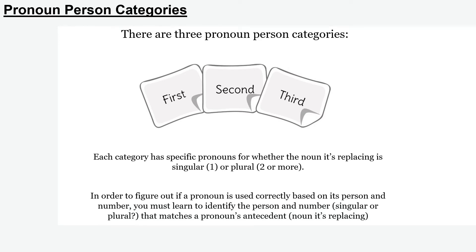In order to figure out if a pronoun is used correctly based on its person and number, we first have to identify the person and number that matches a pronoun's antecedent — the noun that it's replacing. For our purposes, we aren't going to be working very much with second person. It does come up, but not nearly as frequently as first and third person, so we are going to be focusing only on first and third person.